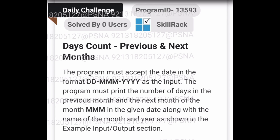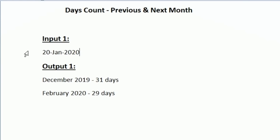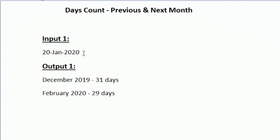This is the question asked in today's skill track daily challenge. In the first line of our input we are given a date. For our sample input one, the given date is 20th January 2020, and our task is to print the previous month and the next month details.